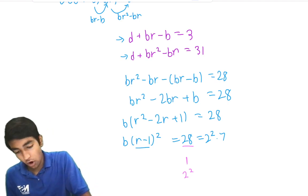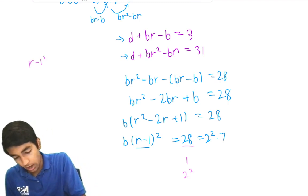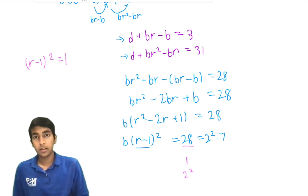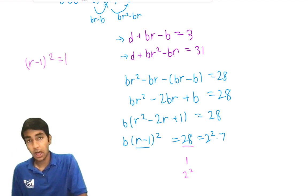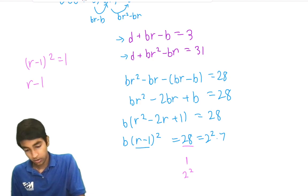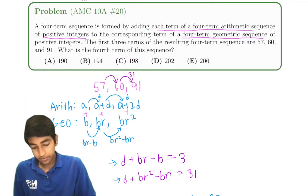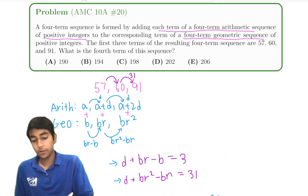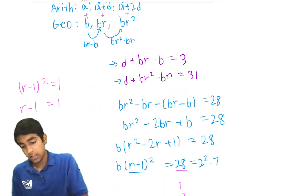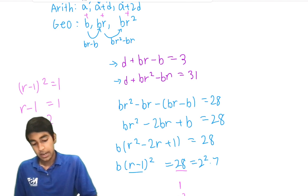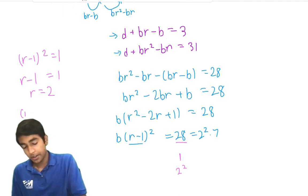Let's see what happens if r minus 1 squared is 1. If this is the case, then we have that r minus 1 equals 1 or negative 1. But it's a positive integer, so it has to be 1. That means r equals 2. Now the second case, r minus 1 squared equals 2 squared. In this case, we have r minus 1 equals 2, so r equals 3.